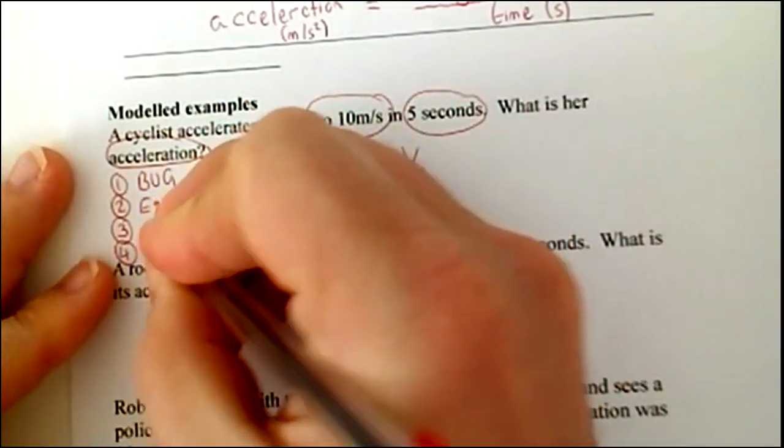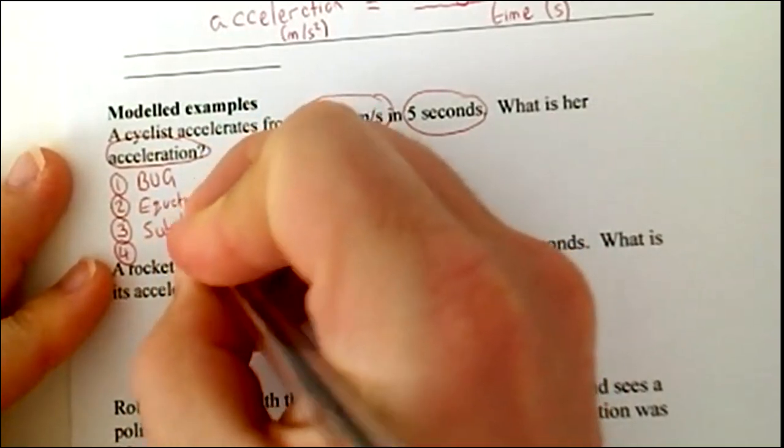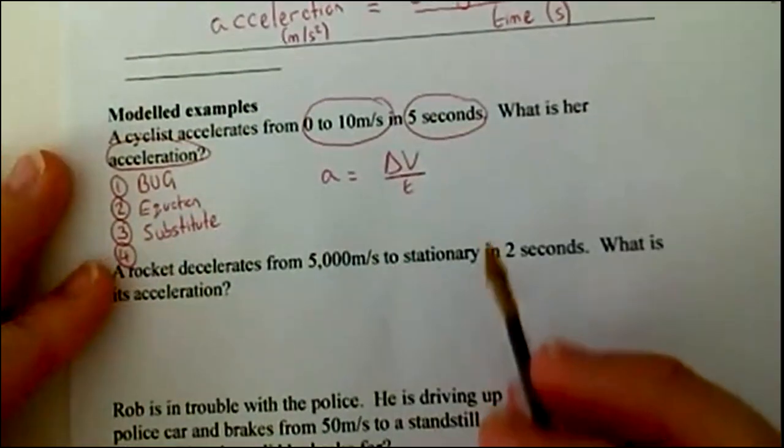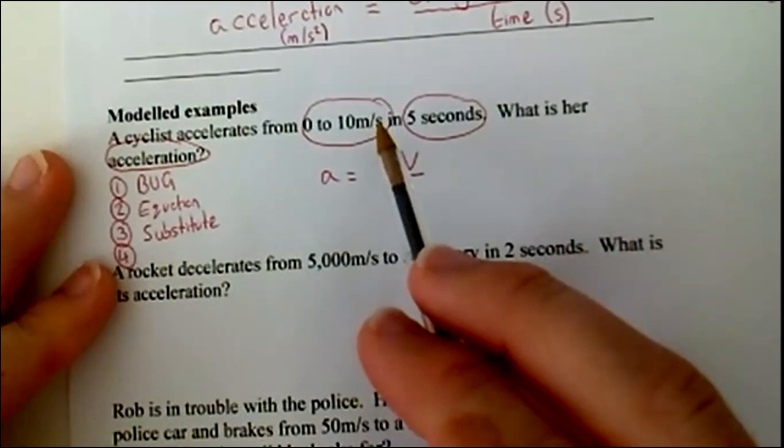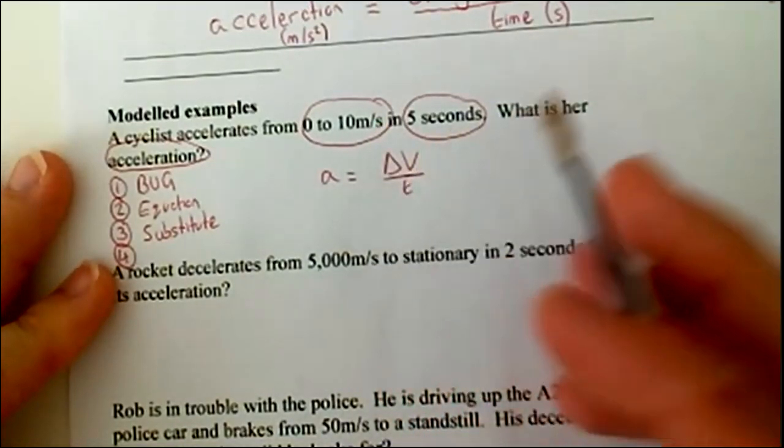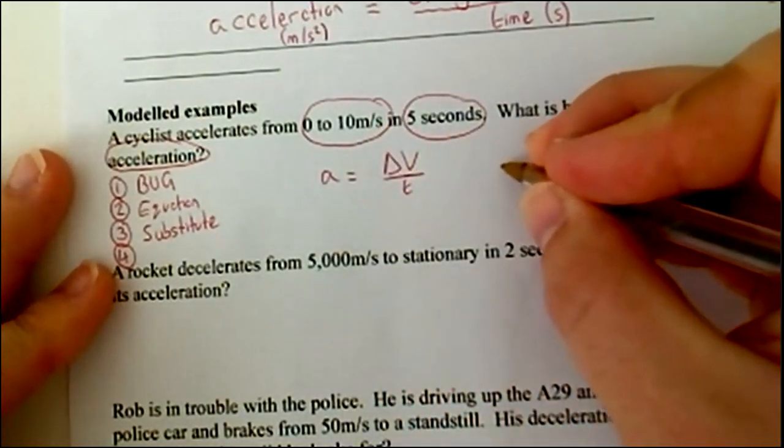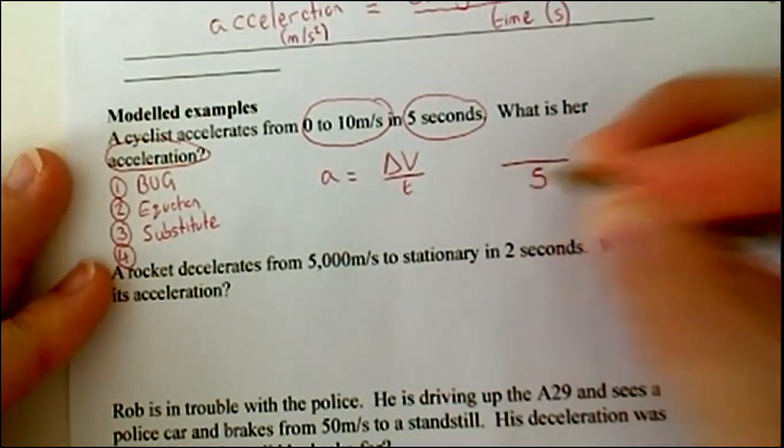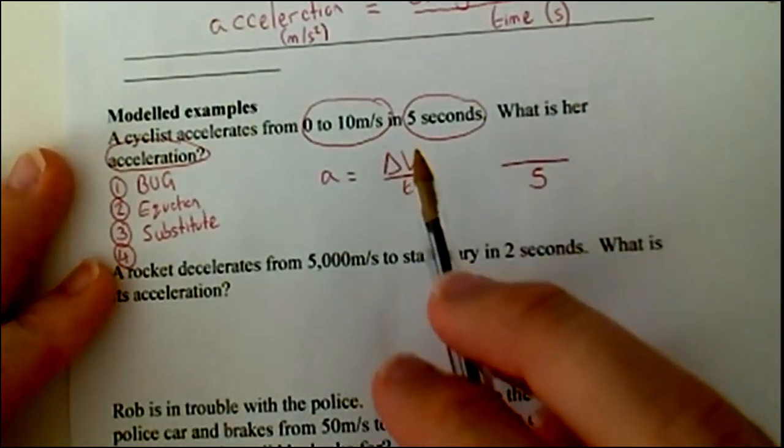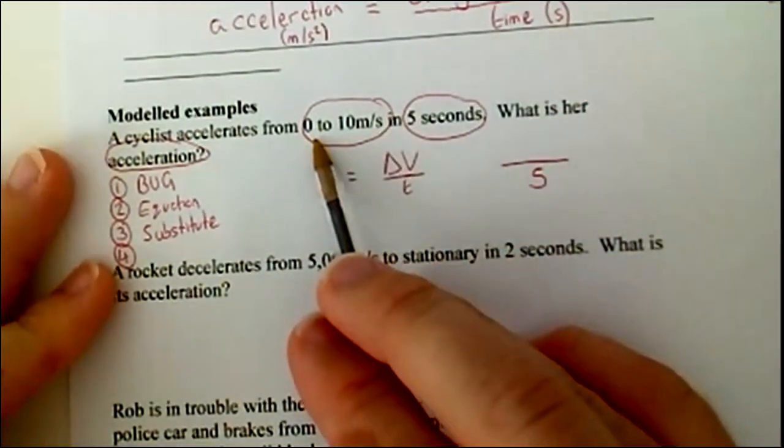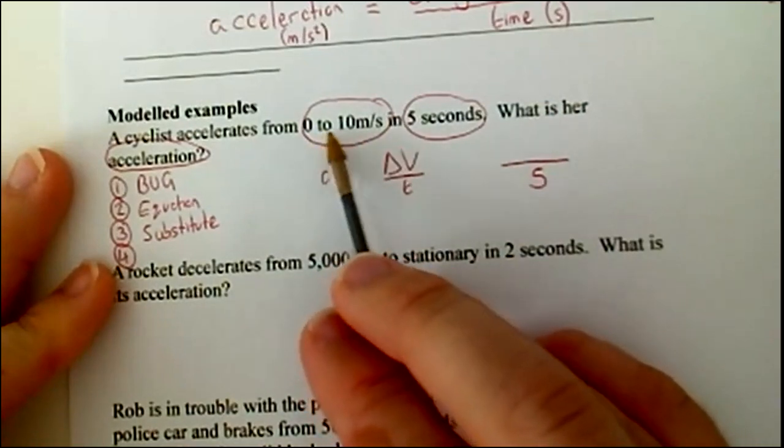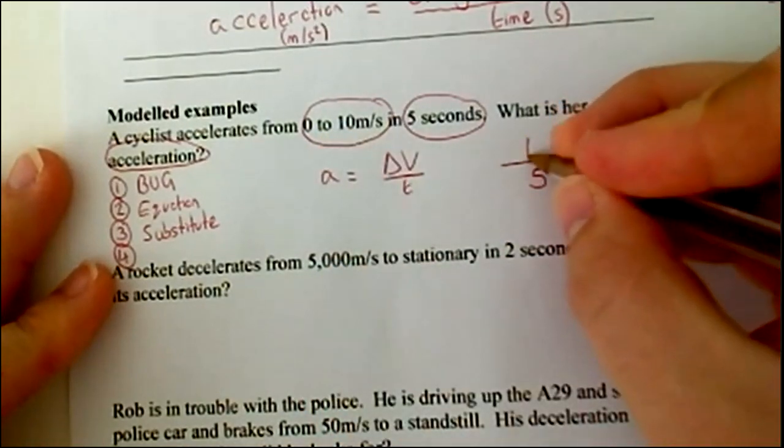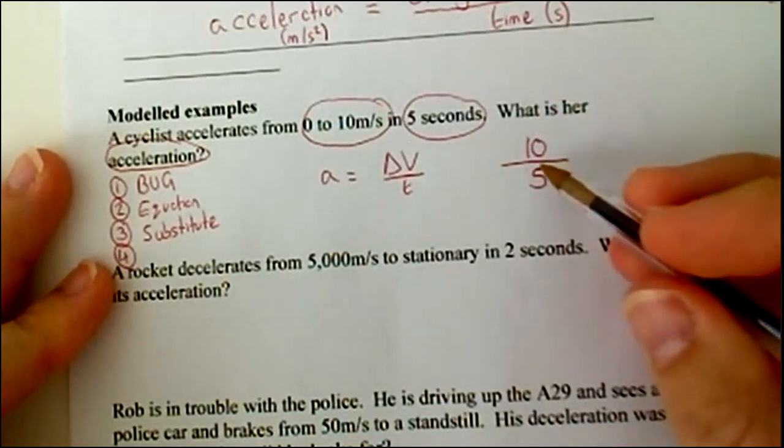Step three, substitute. So, this time you're going to substitute in your values. Now, we can see, we have been told the time is five. Straight away, I can see that t is five. So, I'm going to put like that. The change in velocity, you're going to go from zero to ten. So, the difference between these is ten. So, ten metres per second divided by five.